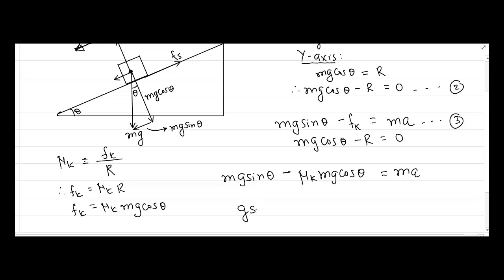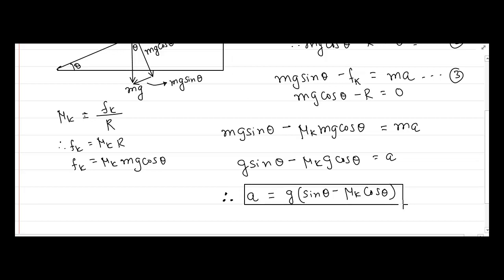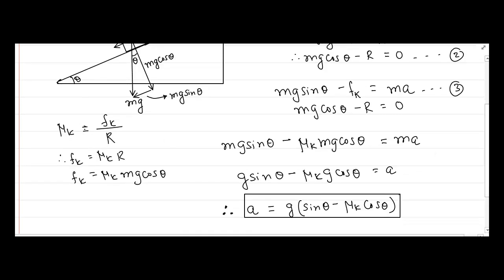We can take out M from all three terms, giving us g sin theta minus mu k times g cos theta equals A. Therefore the acceleration A of the block is equal to g times the quantity (sin theta minus mu k cos theta). Thus we have obtained an equation for the acceleration of the block which is sliding down an inclined plane due to its own weight.